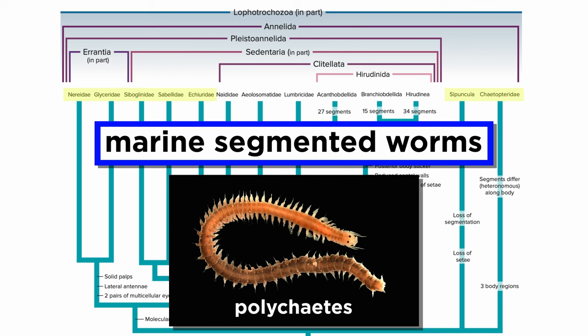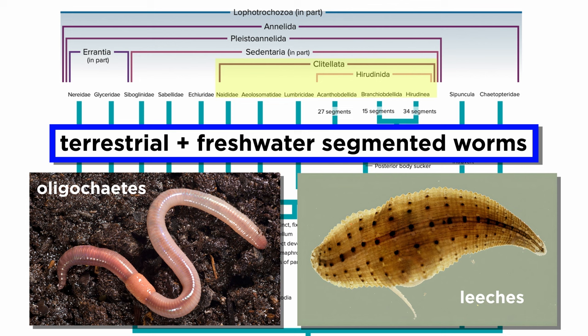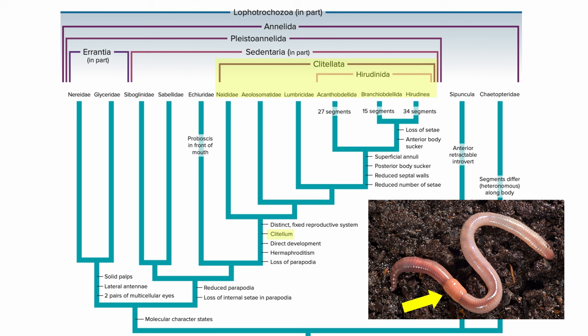In this tutorial, we are going to cover the terrestrial and freshwater segmented worms of clade Clitellata. This includes the earthworms and their relatives, sometimes called oligochaetes, as well as the leeches. Members of this clade are unique in that they all have a reproductive structure known as a clitellum, found on no animals outside of Clitellata.